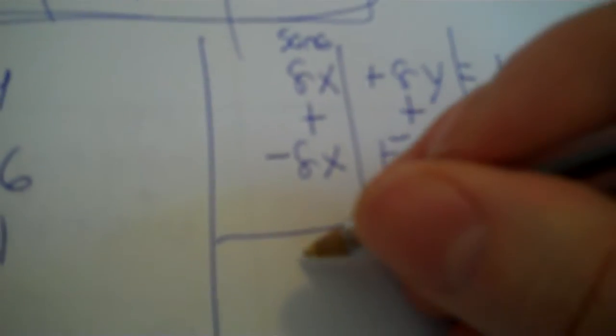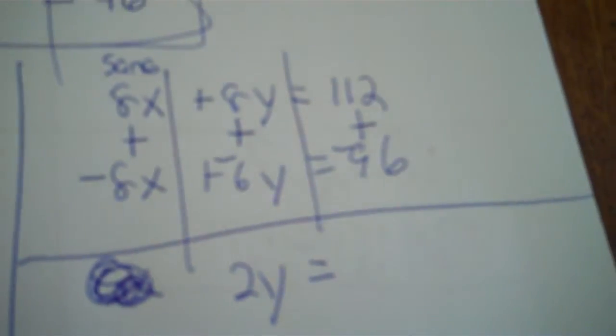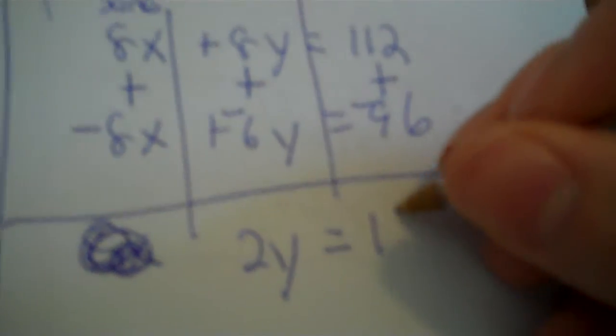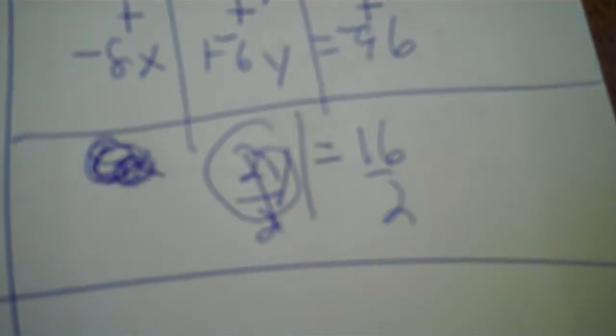So I add those. It's 0X. Add those. 8 plus negative 6 is 2. 2Y. 112 plus negative 96 is 16. Divide each side by 2. 16 divided by 2 is 8. So Y equals 8.